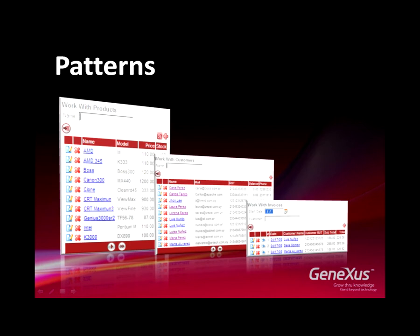For instance, there could be the chance of filtering customers in the list based on certain criteria, editing data on a customer, creating a new customer, or viewing a customer's invoice or related data. And when we work with customers, products, or invoices, the selection list is similar for all cases — they all abide by some pattern.